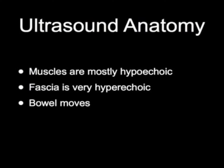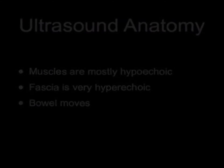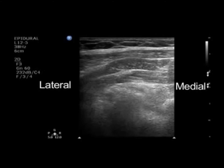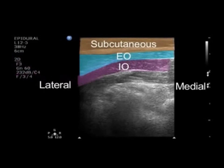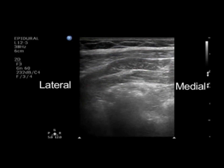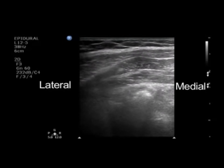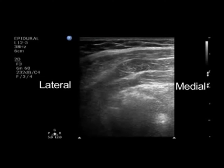The ultrasound anatomy: muscles are mostly hypoechoic, meaning dark. Fascia is very hyperechoic, appearing very white. The bowel has movement. Here is the ultrasound appearance. The first brown layer is the subcutaneous tissue, the turquoise layer is the external oblique, the purple layer is the internal oblique, the transversus abdominus appears green. One can also appreciate the movement of the bowel deeper in the image.